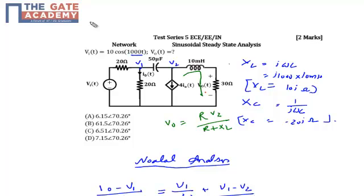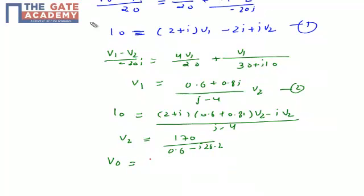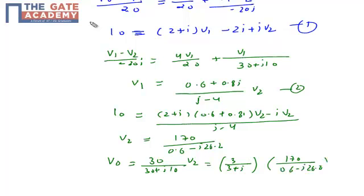Simple current divider in this path. So let's apply the current divider here. So my V0 will be equal to 30 upon (30 plus J10) times V2, which will be equal to 3 upon (3 plus J) times 170 upon (0.6 minus J26.2). It means that my final output expression will be V0 equal to 6.154 magnitude with angle of 70.26 degrees.